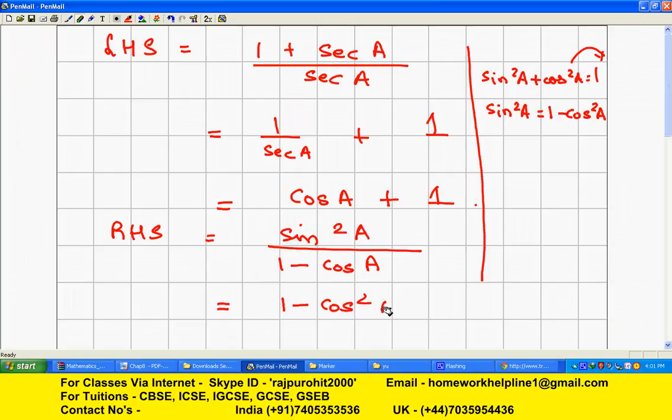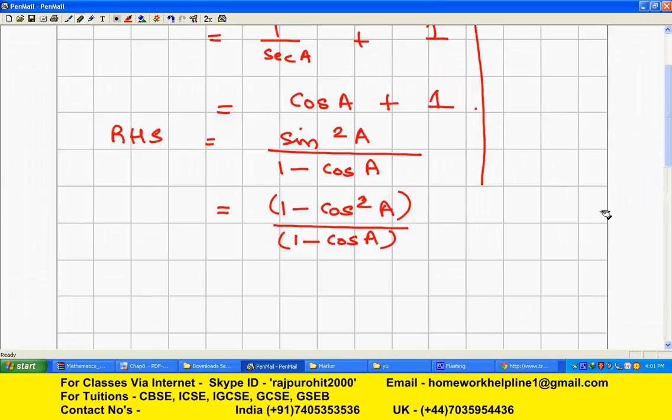This one also can be written as 1². So this is of the form a² - b², so this will become (1 - cos A)(1 + cos A).